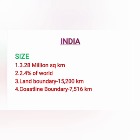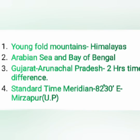We all know India is the 7th largest country in the world. Here are some important facts about India's size. First, 3.28 million square kilometers is the total geographical area of India. Second, it accounts for 2.4 percent of the world's area. Third, the land boundary of India is 15,200 kilometers. Fourth, the coastline boundary of India is 7,516 kilometers.